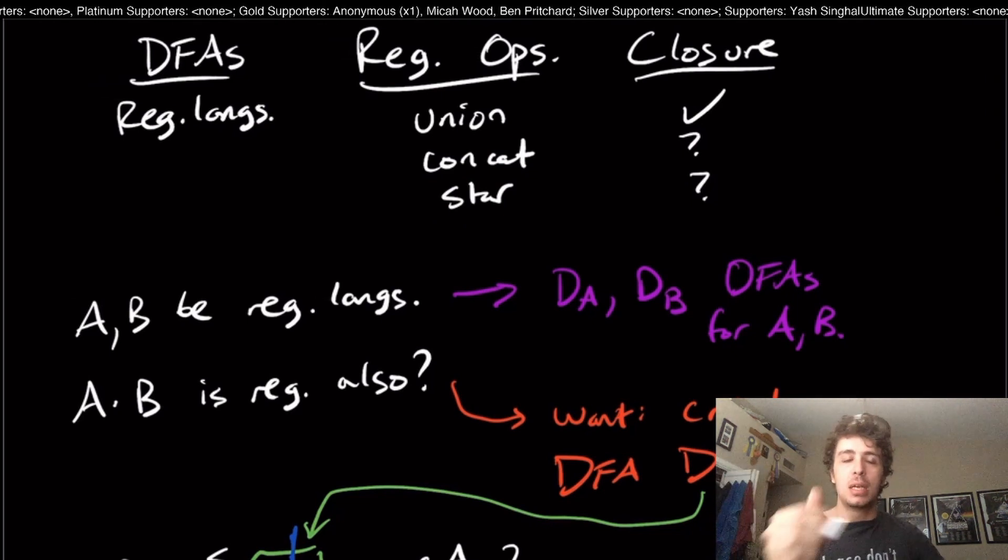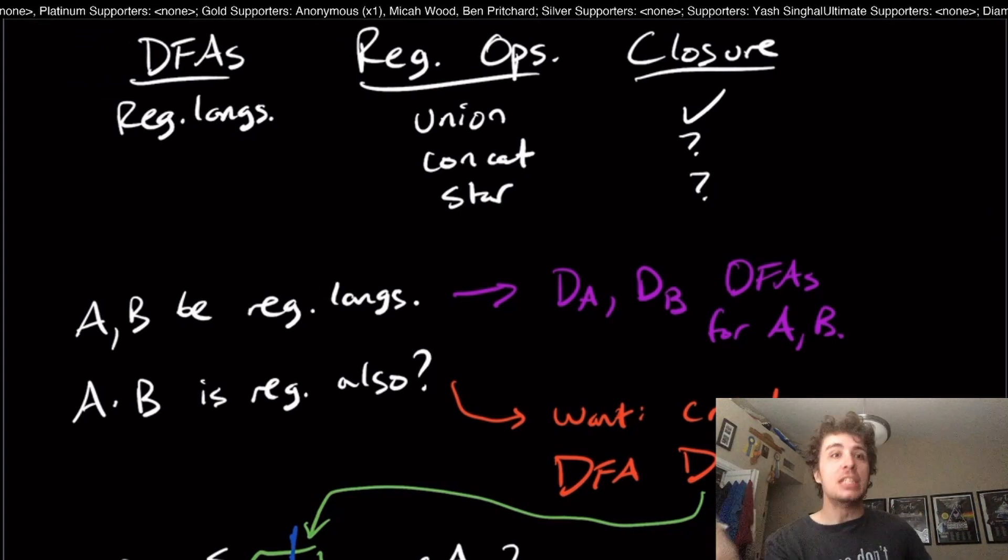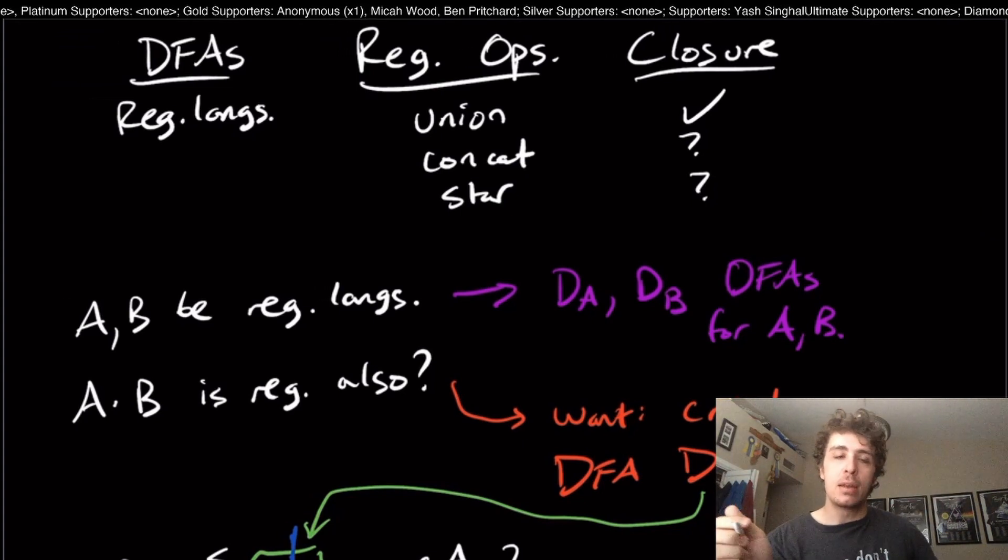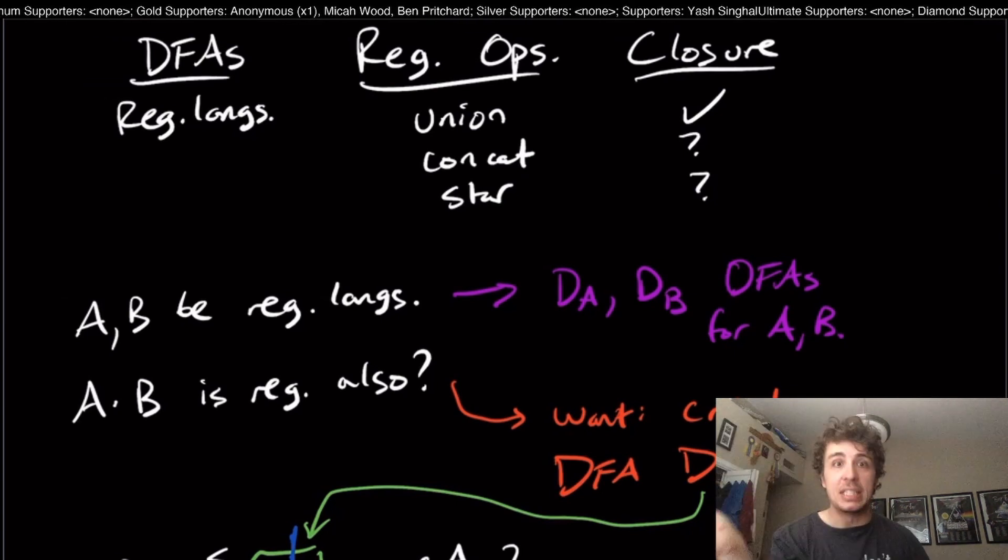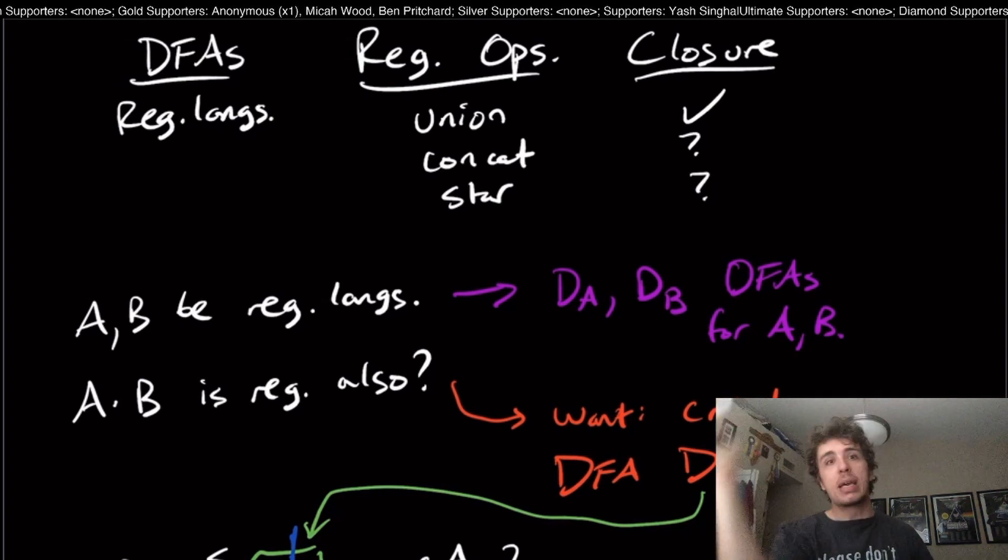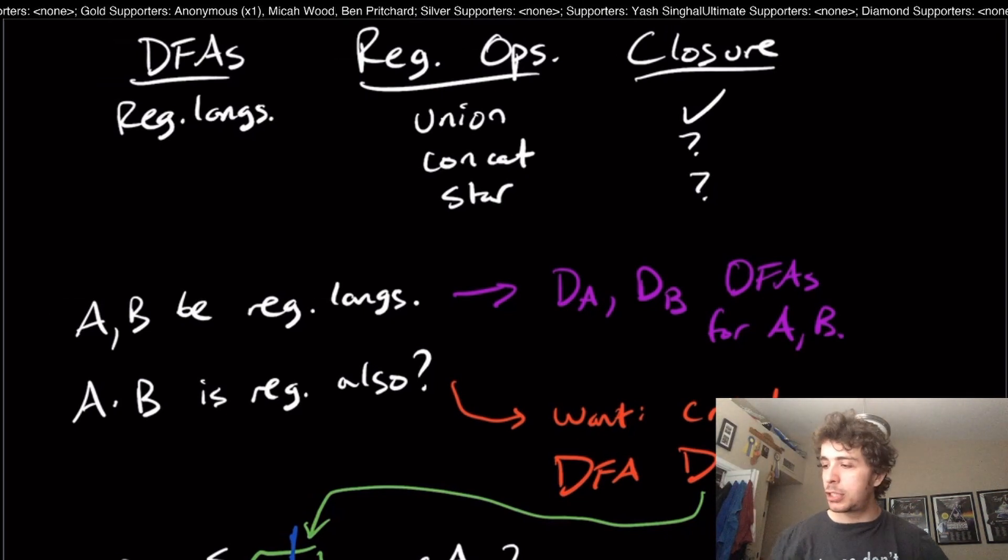For star, it's the same idea. We would need to go through the machine a whole bunch of times, but in order to go from a final state back to the original state so that we can go through it again, we're either breaking the fact that it's a DFA to start with because we're adding a transition, but also we've got to read something on that transition because it's a DFA.